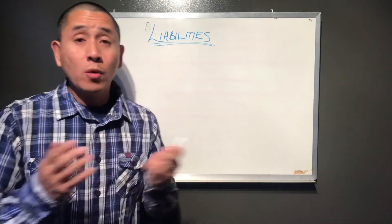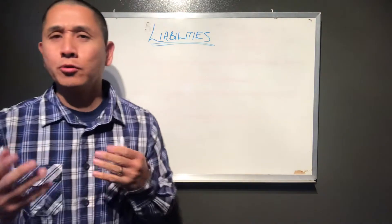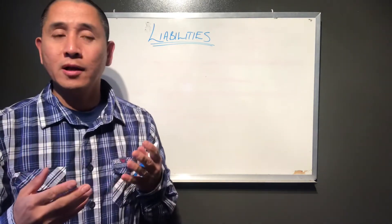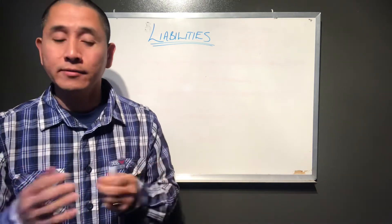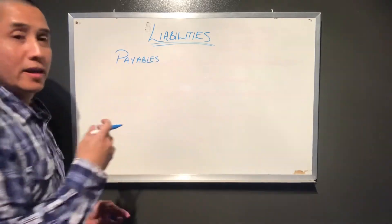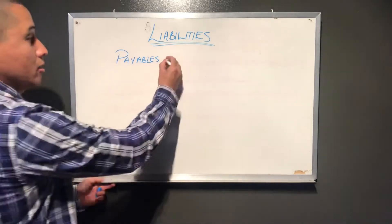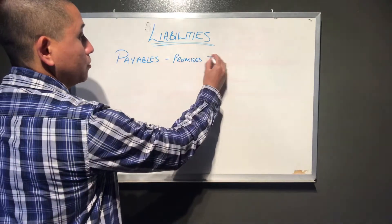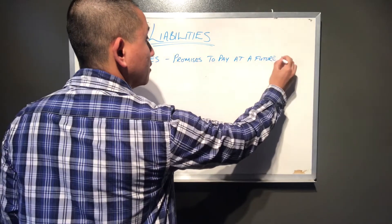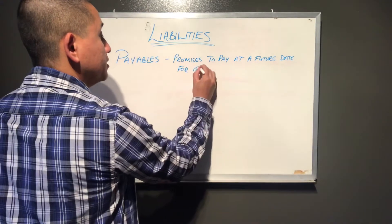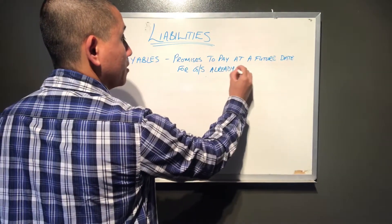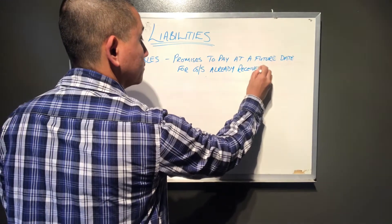So, liabilities — what are they? We can look at them as legal obligations that individuals or organizations have when they purchase certain goods or attain certain services from other organizations or individuals and they haven't yet paid for them. We can look at certain things such as payables, which are promises to pay at a future date for goods or services that have already been received.